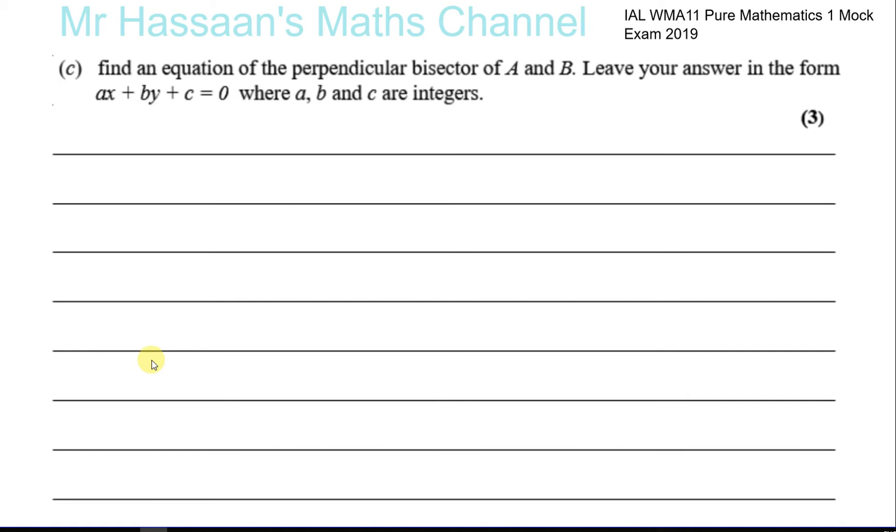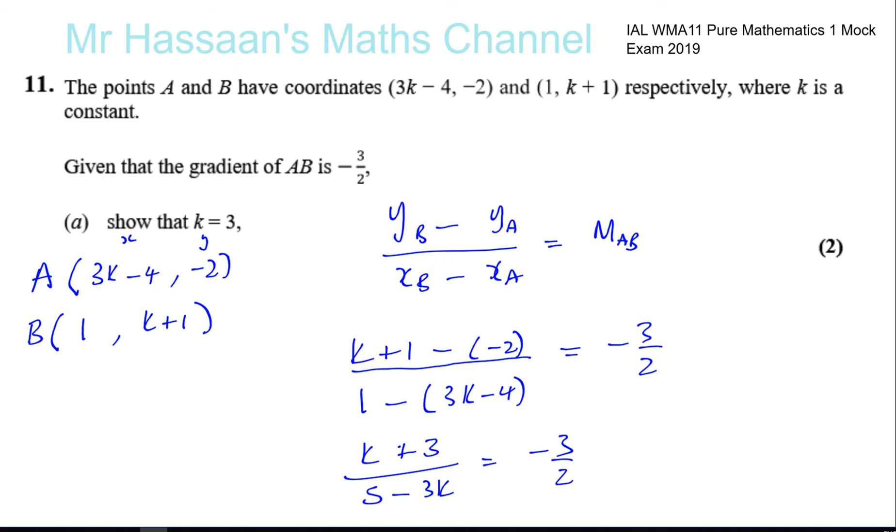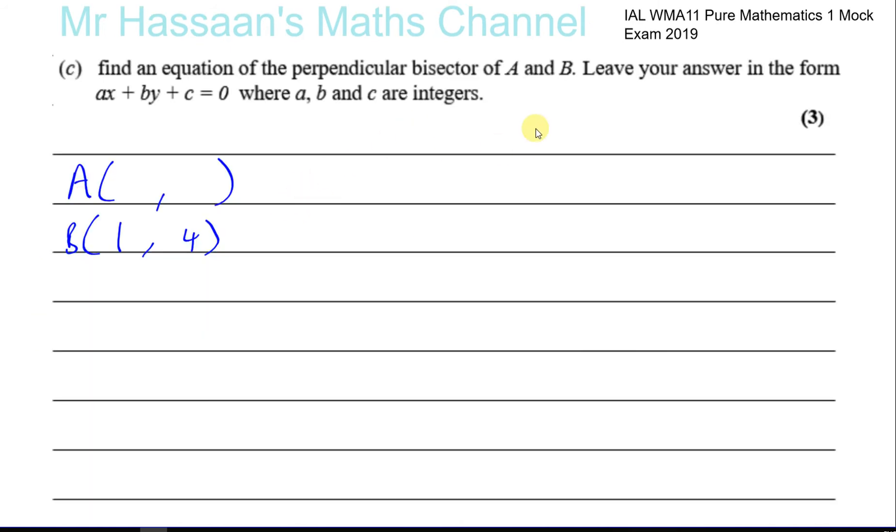And now we've got to do part c. It says, find an equation of the perpendicular bisector of A and B, leaving your answer in the form ax + by + c equals 0. Okay, so now we need to know the coordinates of A and B now. So B we know is (1, 4). Okay, for A it's 3k - 4, -2. So A was 3k - 4 and -2. And we know that k was equal to 3. So that's going to be 9 - 4, which is 5, and -2. Okay, 3k is 3. So that's 9 - 4, which is 5. Yeah, so these are the two points.